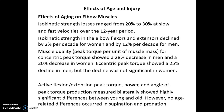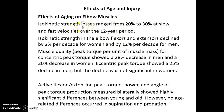Isokinetic strength losses range from 20% to 30% at slow and fast velocities over a 12-year period. This means that in a normal population, measuring the same person's elbow muscle strength isokinetically after 12 years shows a deterioration of 20–30% — not in athletic populations, but under normal conditions.